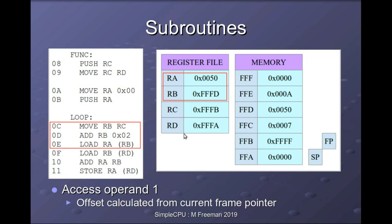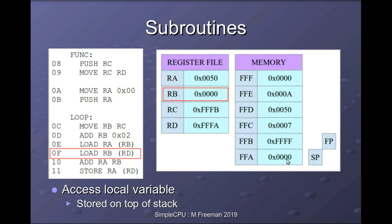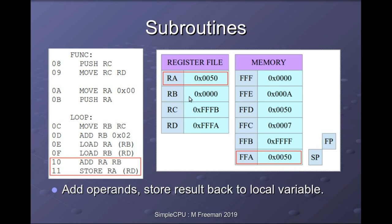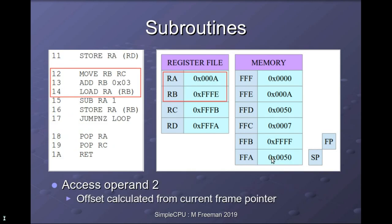Now we start our multiplication routine. First we access one of the parameters passed to the subroutine. We know the first parameter is at offset +2 from the frame pointer, so we add 2 to the frame pointer — giving FD — and read that memory location to get the value 50. Next we access our local variable on the stack, which is our running accumulator. We load it into register RB, add the multiplicand to the running total, and store it back to our local variable.